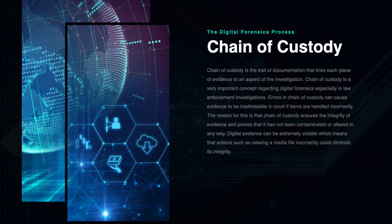Chain of custody is the trail of documentation that links each piece of evidence to an aspect of the investigation. Chain of custody is a very important concept regarding digital forensics, especially in law enforcement investigations. Errors in chain of custody can cause evidence to be inadmissible in court if items are handled incorrectly. Chain of custody ensures the integrity of evidence and proves that it has not been contaminated or altered in any way. Digital evidence can be extremely volatile, which means that actions such as viewing a media file incorrectly could diminish its integrity.